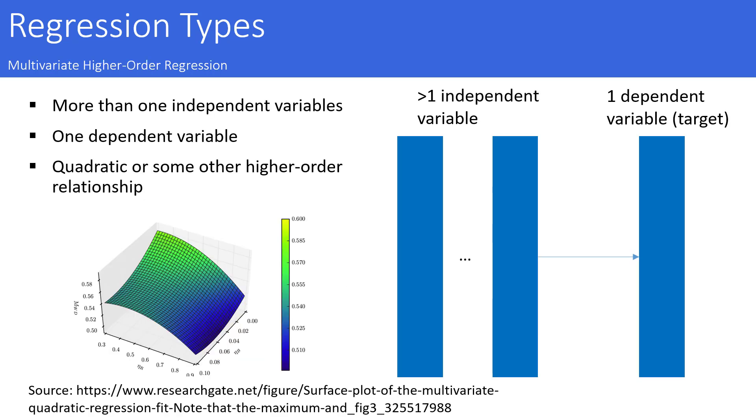So far, we assumed that the order of the relationship is one and we have linear regression. It might be that a higher order polynomial fits the data much better. So in difference to our previous models for multivariate regression, we now have multivariate higher order regression. The order might be quadratic or even higher. In case of two independent variables, you are not fitting a straight line anymore, but rather a curved surface.